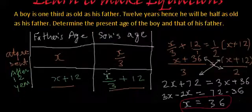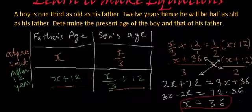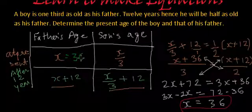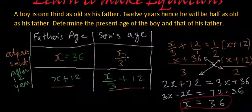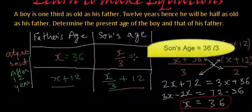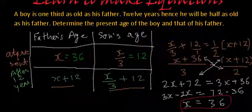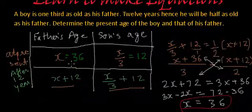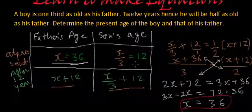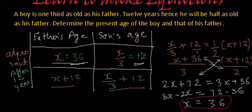So what is x here? x is father's age. Father's current age is 36, and son's current age is one-third of 36, that is 12. So at present, father is 36 years old and son is 12 years old. This was the method using one variable.